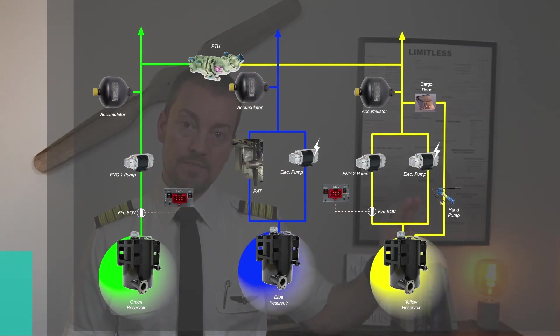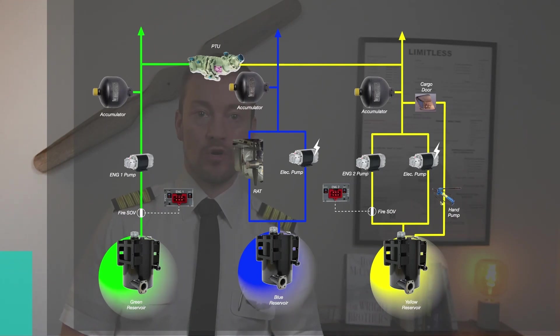The yellow system is driven by engine number two by its own engine driven pump as well as, in case it's needed, an AC electrical pump.